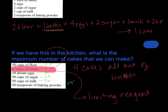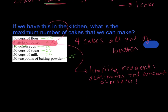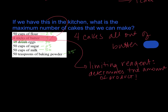The limiting reagent is what limits the reaction — it determines the amount of product we get. It always runs out first in the reaction, and once we're out of that ingredient the reaction can't go anymore. Everything else in this reaction, all of these other things, they're called excess reagents.